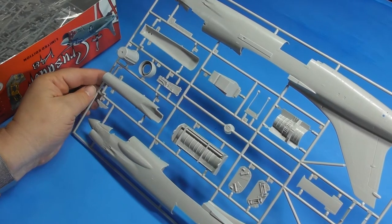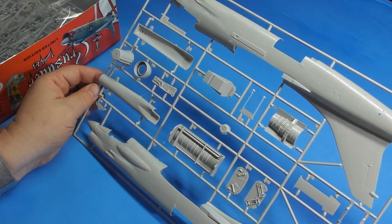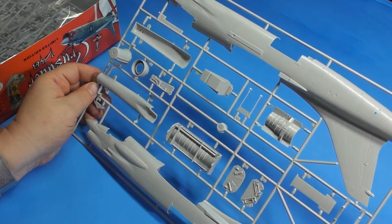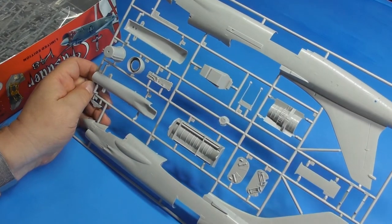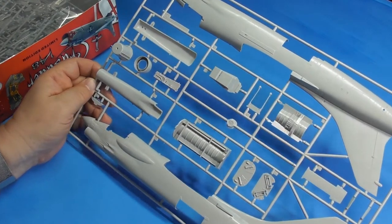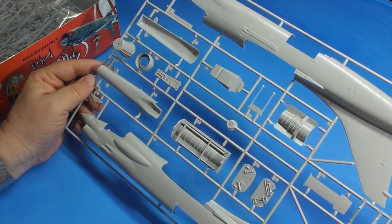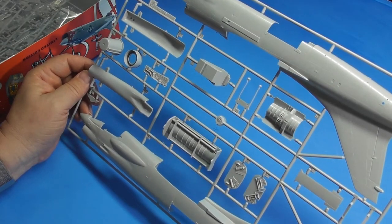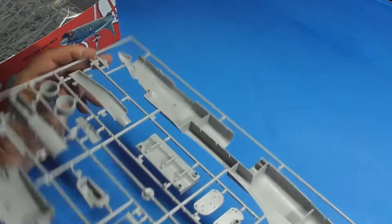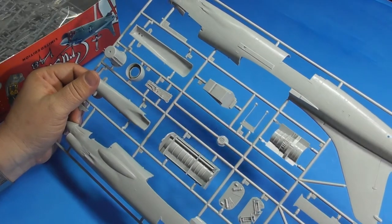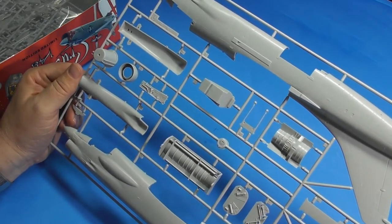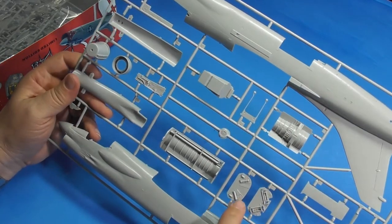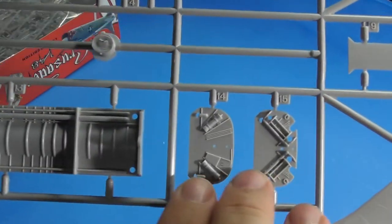First sprue. Sprue A, conveniently enough, has the fuselage. Now, if you've seen the Edward kit of this, which I do have one or two, not very many of them. It is very well detailed. Very nice.